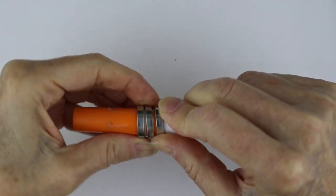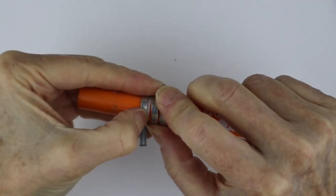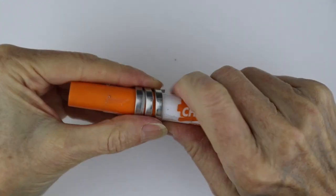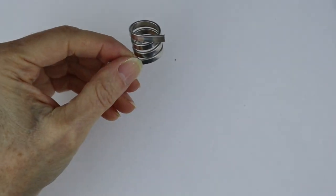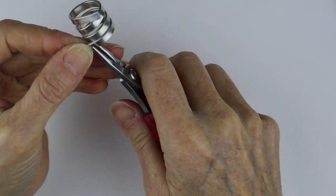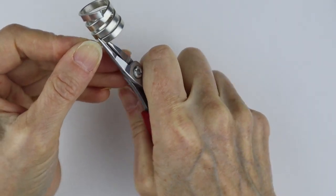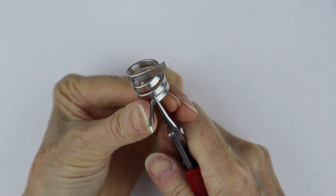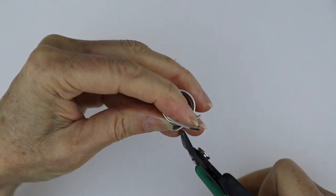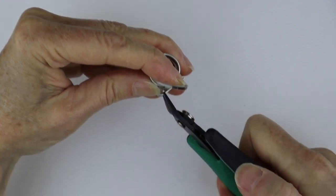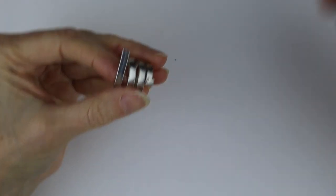Basically what you want to do is finish the ends, so you can cut them just flush and file them, or you can make it a little more fancy and just bring the wire back here and then clip it. And then with your flat pliers, just bring this in.